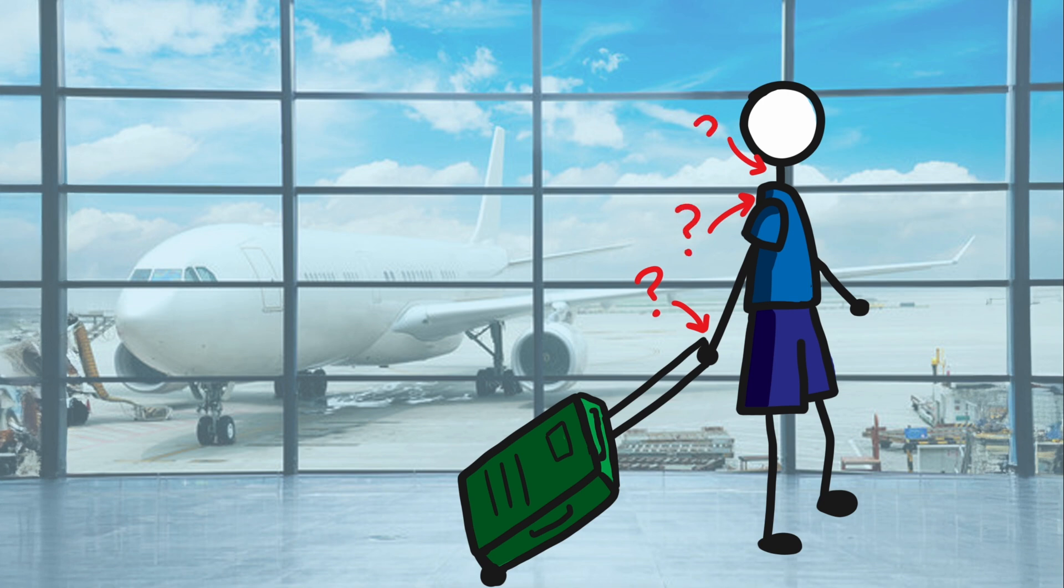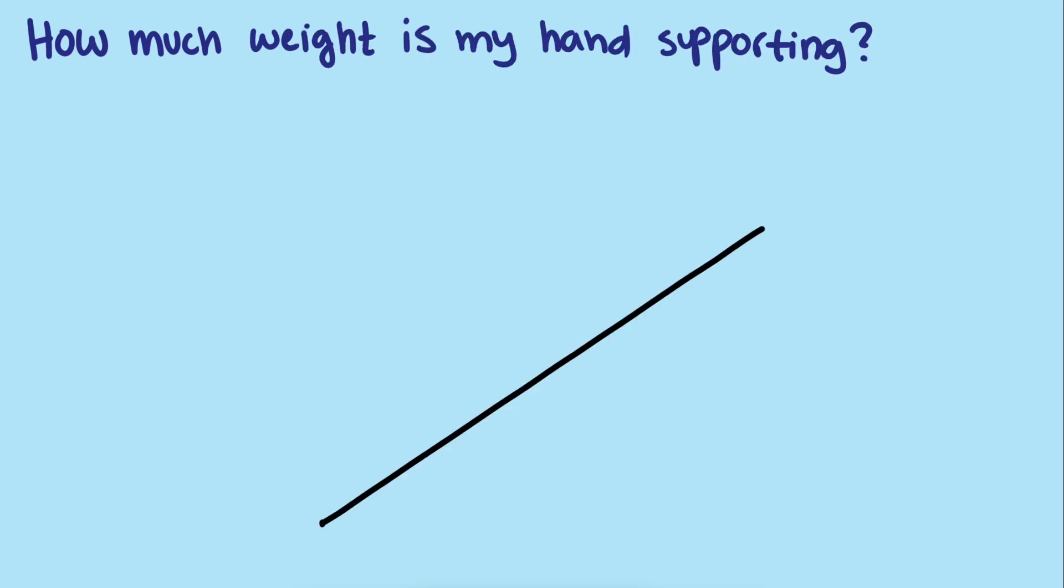Well, like any curious mathematician, I sat down to do the math and find out. The main question: how much weight is my hand actually supporting when I pull the suitcase? It turns out the handle length plays a big role, and a standard design puts your hand in one of the worst positions possible, maximizing the strain. To solve this problem, we will need the center of gravity of the suitcase and some trigonometry to calculate the force on my hand.